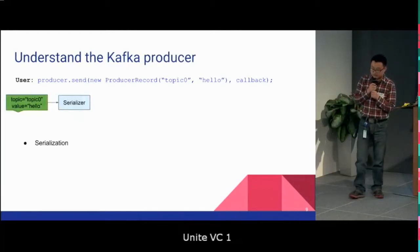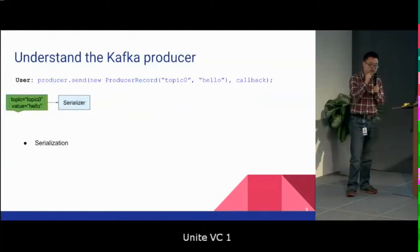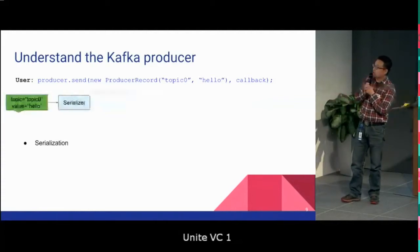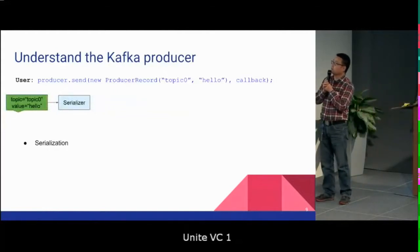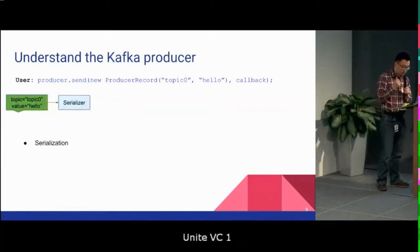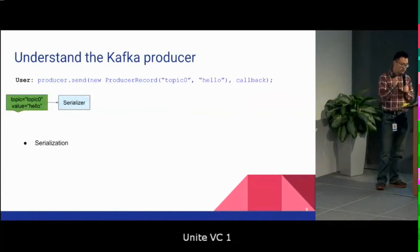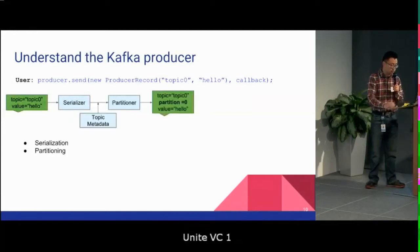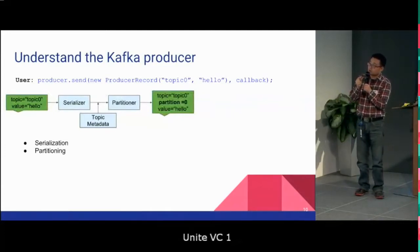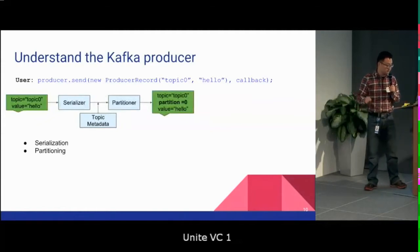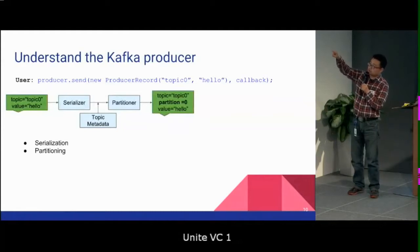Let's look at the actual flow when you send a message through a Kafka producer. A user calls producer.send, providing a ProducerRecord — say, sending to topic zero with value 'hello' — and provides a callback that fires after the message finishes, either successfully or with failure. The first step is to serialize the message into bytes, then determine which partition the message should go to — that's partitioning. Both the serializer and partitioner are pluggable. Let's assume the partitioner decides this message goes to partition zero of topic zero.